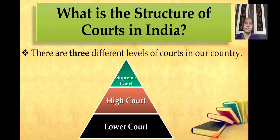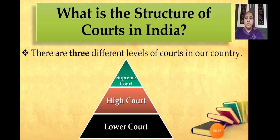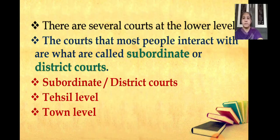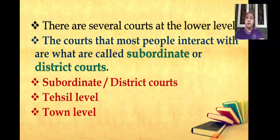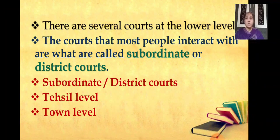Moving to the next topic — what is the structure of courts in India? There are three different levels of courts in our country. There are several courts at the lower level, while there is only one at the apex level. Through this pyramid, you can understand the three levels: the lower court, the high court, and the Supreme Court. The courts that most people interact with are called the subordinate or the district court. They are usually at the district or tahsil level or in towns and they may hear many kinds of cases. Each state is divided into districts that are presided over by a district judge.